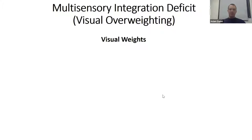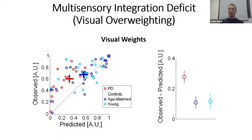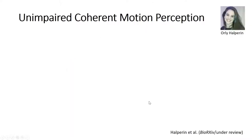The next thing we asked was about multi-sensory integration. Bayesian theory postulates that we should integrate our senses based on the reliability of the cues — we rely on a more reliable cue more than a less reliable one, with quantitative predictions about weighting. We studied predicted weights versus observed weights of the visual cues and found that Parkinson's patients are further from the diagonal than controls, meaning they overweight their visual cues — they rely more on visual cues despite their impairment.